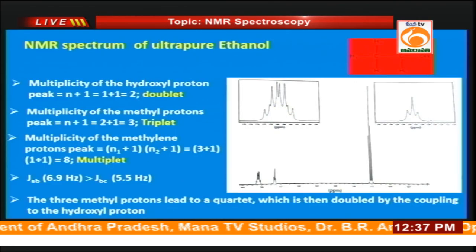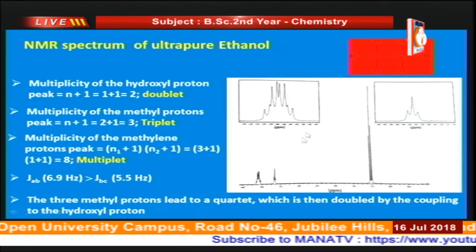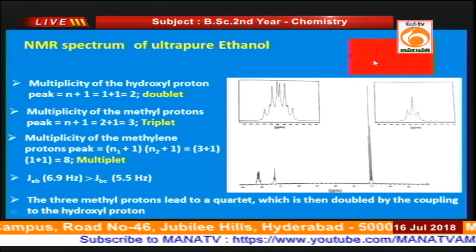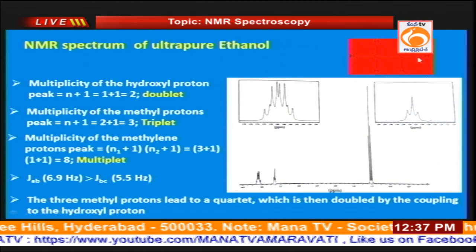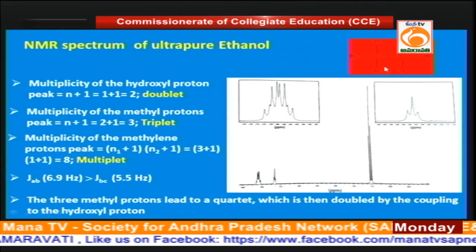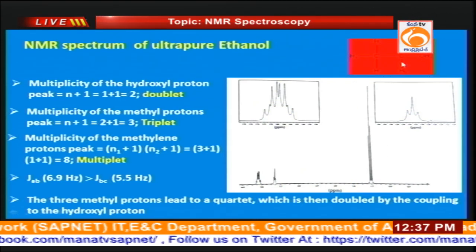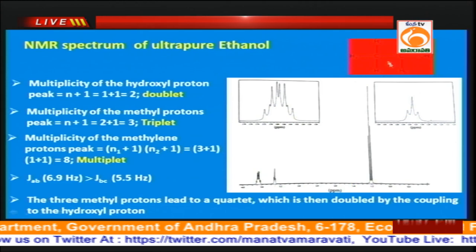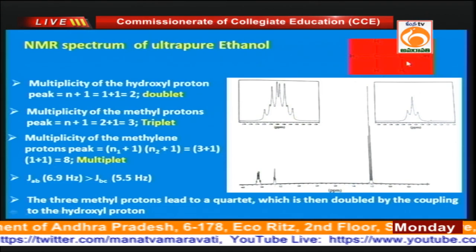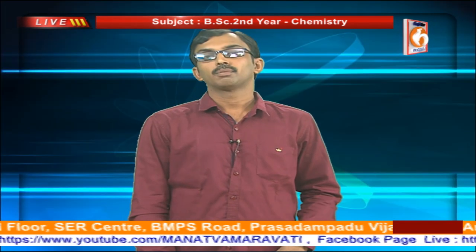Now let us consider the NMR spectrum of ethanol. In ethanol there are three types of protons: the hydroxy proton, the methylene proton, and the methyl proton. The methyl proton couples with the methylene protons (n = 2), so we get a triplet. The methylene proton couples with both the hydroxy proton and the methyl protons, giving (3 + 1)(1 + 1) = 8 lines. For the hydroxy proton, coupling is only with the methylene protons (n = 2), so 2 + 1 = 3, giving a triplet as shown in the NMR spectrum.